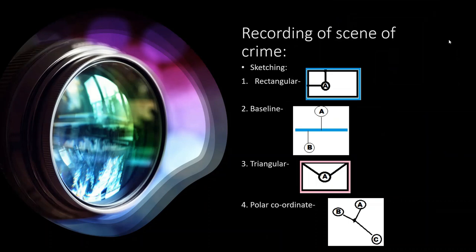Recording of the crime scene can be done by sketching, note making, photography, and videography. Sketching can be done in four ways: the rectangular method, done in a room using two walls as reference for distance; the baseline method, where a single line is used to mark evidence positions; the triangular method, which uses a single wall and forms a triangle between its two ends and the evidence; and the polar coordinate method, best suited for outdoor scenes, where a single point is used and both angle and distance are measured and marked.